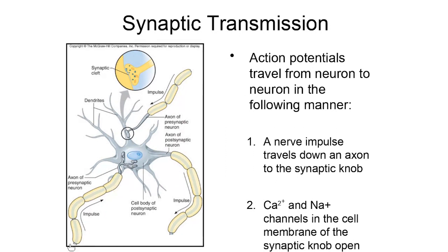We're going to look at synaptic transmission in the brain — what's actually happening to allow neurons to communicate with each other. A nerve impulse travels down the axon to the synaptic knob. On that synaptic knob, we have calcium channels and sodium channels. When the action potential gets to that synaptic knob, both calcium and sodium channels open up on that structure.